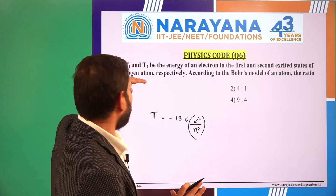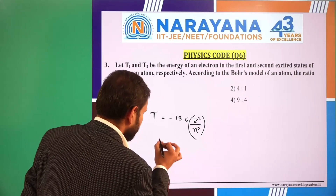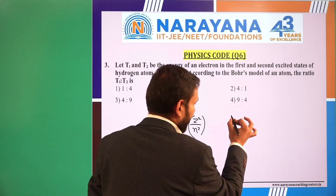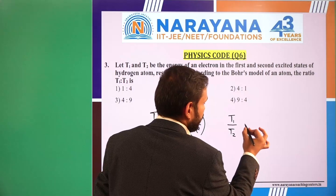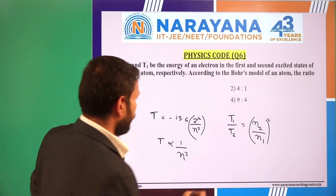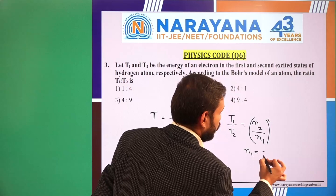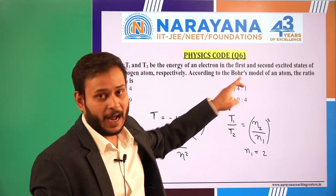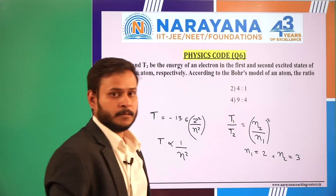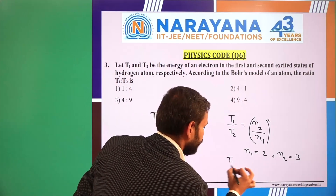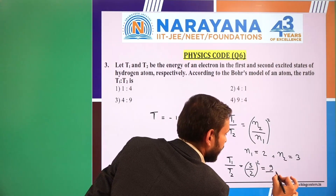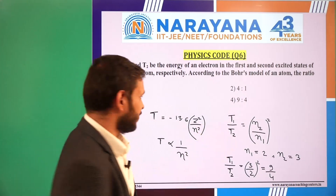For hydrogen atom, Z is constant, so T is inversely proportional to N². We can write T1 upon T2 equals N2 by N1 whole squared. Now N1 is 2 because it is the first excited state above ground state, and N2 is 3. Putting in the values, T1 upon T2 equals (3/2)² = 9 by 4. Option 4 is correct.